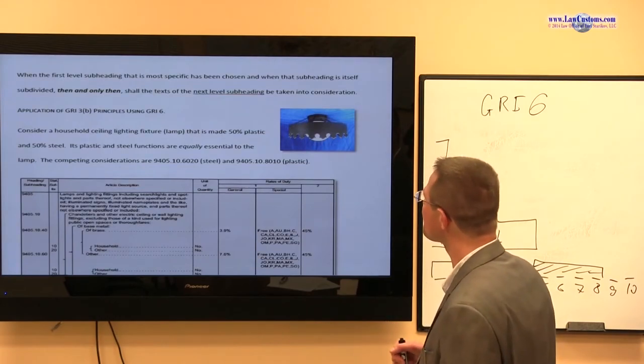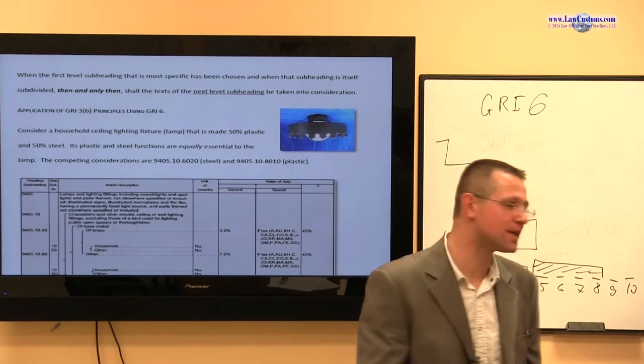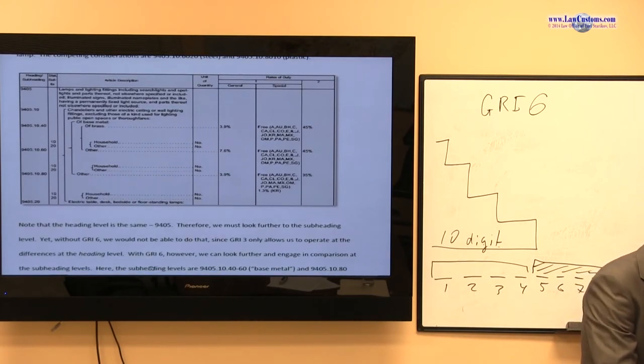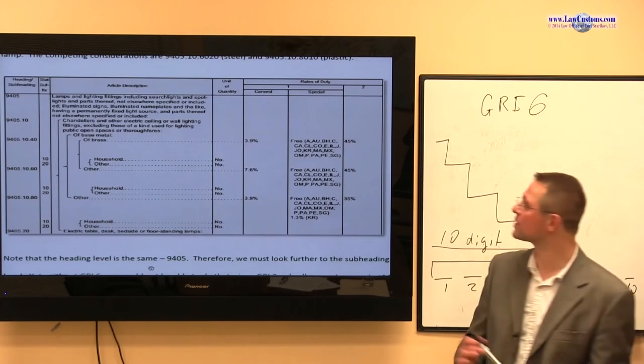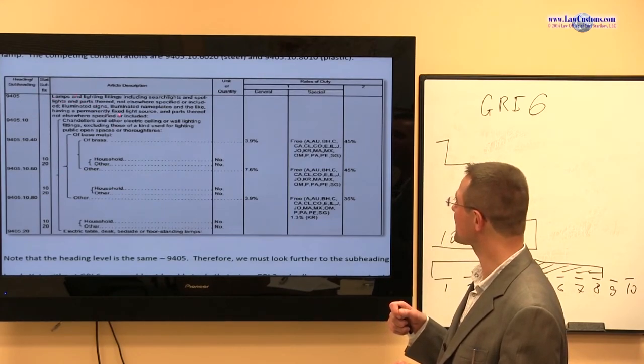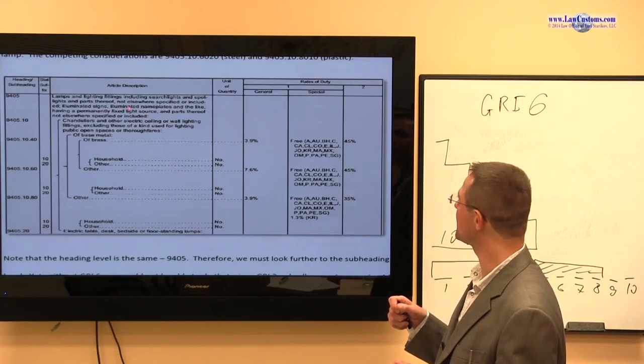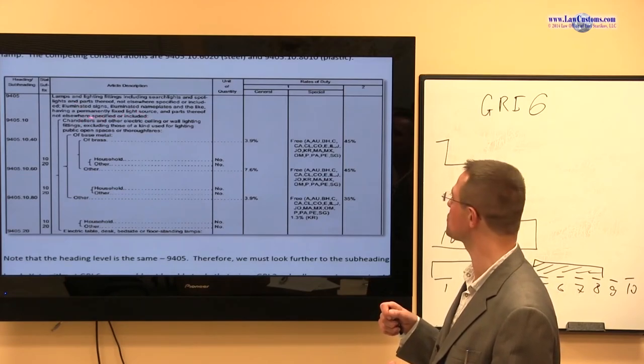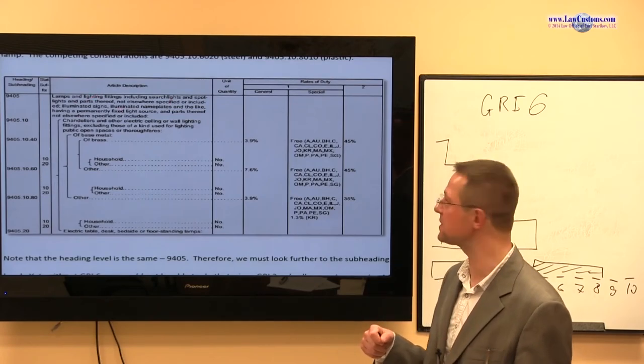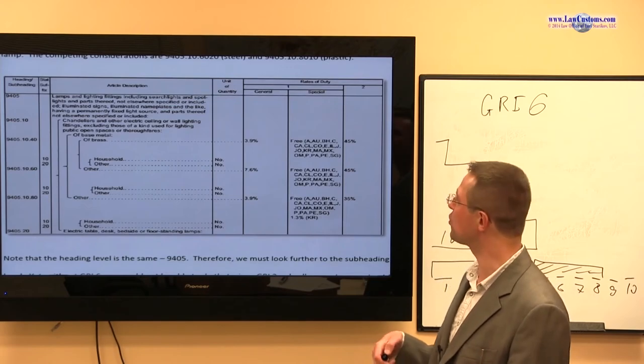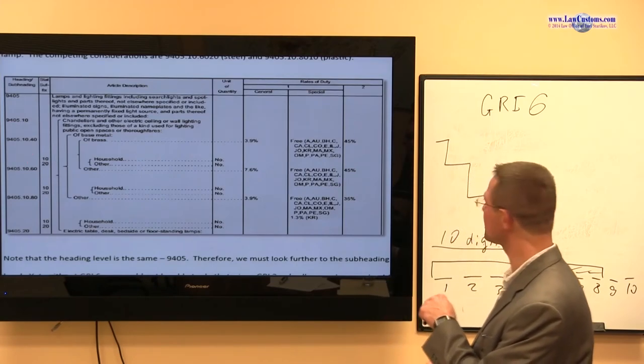So how do you analyze this? Well, the analysis takes you from GRI 1 quickly to GRI 6 to chapter 94. Chapter 94, I'm sorry, chapter 94. 9405 provides for lamps which have a permanently fixed light source, not elsewhere specified or included. So this is the correct provision. This is it. Now, this is as far as you got. This is GRI 1. You got there. Now you go to the subheading analysis at the GRI and the only rule you have for that is GRI 6. You have GRI 6.